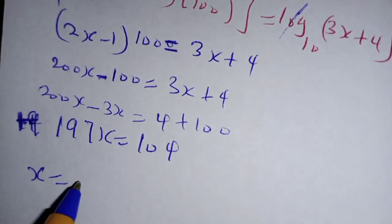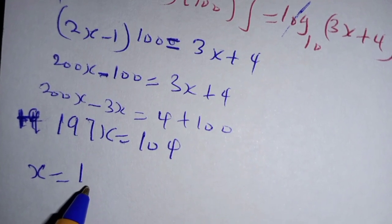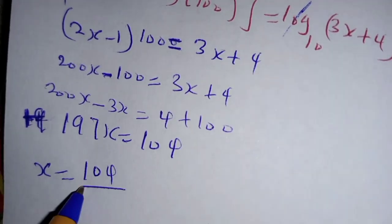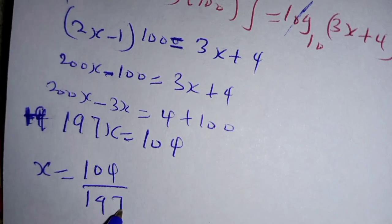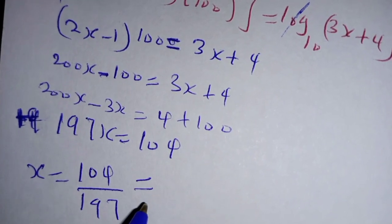So x equals 104 divided by 197, which is equal to...